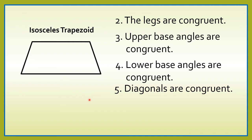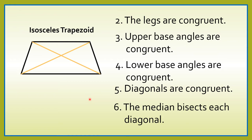Number 5, diagonals are congruent. So, let us draw diagonals. The two diagonals are congruent. Number 6, the median bisects each diagonal. So, let us draw the median. Ito yung isang sample natin ng diagonal. Binisect siya ng median. When we say bisect, ibig sabihin, hinate yung diagonal into two congruent parts. Ibig sabihin, itong part na to ay congruent sa part na to.